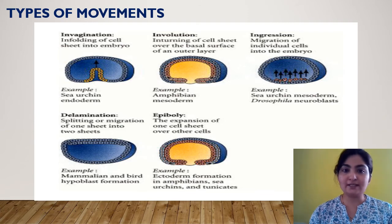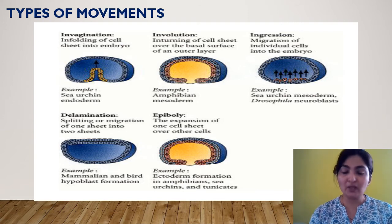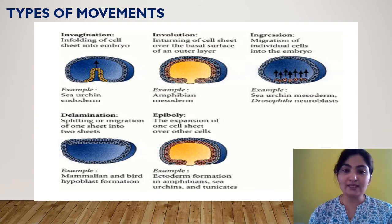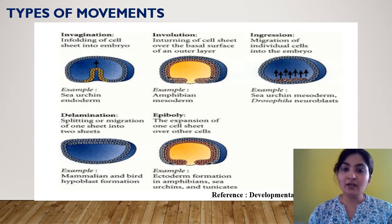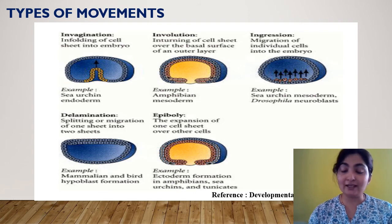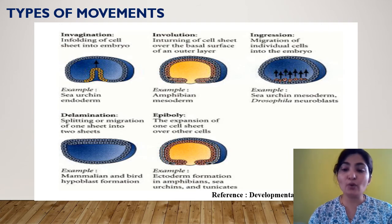The second movement is involution. Again, the cell sheet is involved rather than individual cells. Here, the cells move into the blastocoel in such a manner that once they enter, they place themselves just below the outer external layer. As you can see in the diagram, looking at the arrows, cells moving into the blastocoel are placing themselves just below the outer external layer, shown in blue. The inwardly turning cells forming a new layer below the blue external layer are shown in pink.